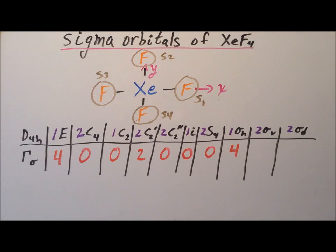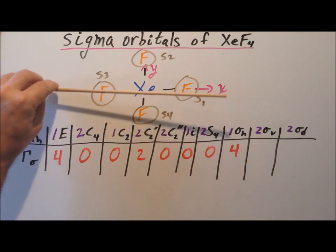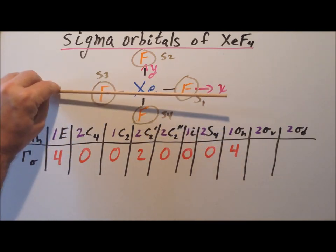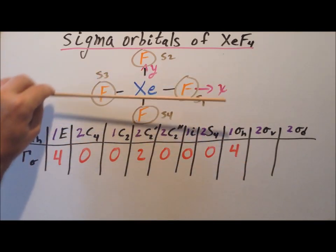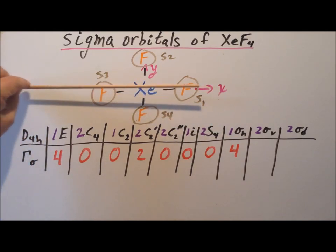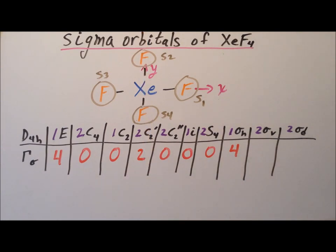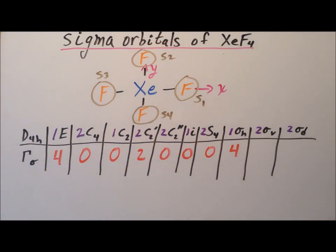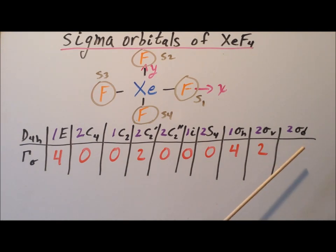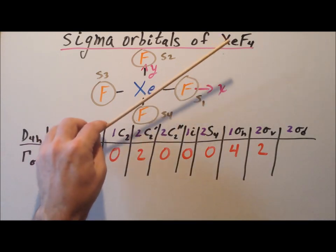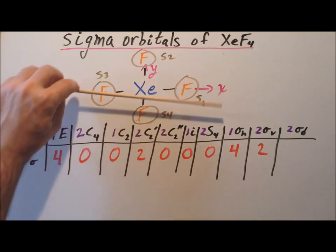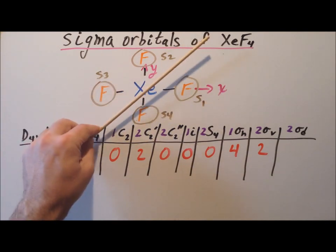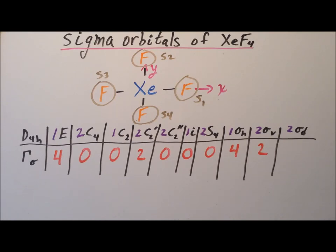For sigma V, the vertical mirror planes go along the X axis or Y axis — the same direction as C2 prime — through the most atoms. This keeps two of the orbitals in position and swaps the other two, so our character here is two. For the last symmetry operation, sigma D, the dihedral mirror has lower priority because it goes through fewer atoms than sigma V. All of the orbitals change position under sigma D, so none stays put and our character is zero.